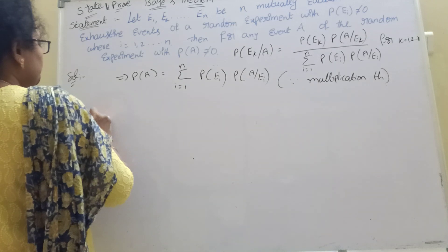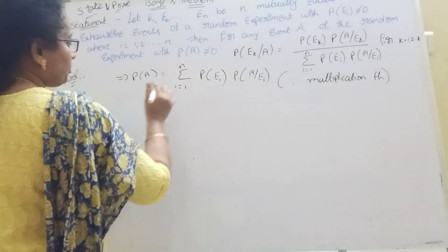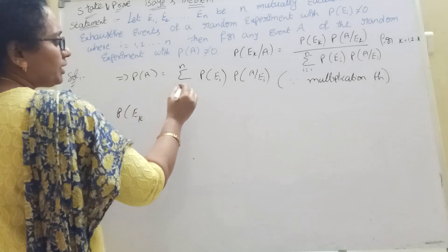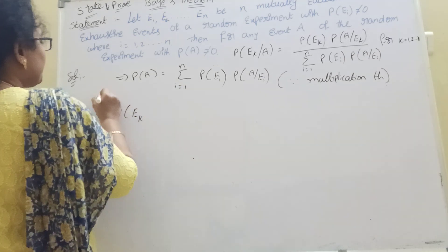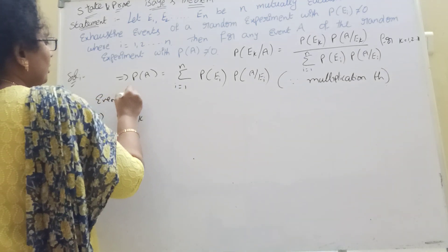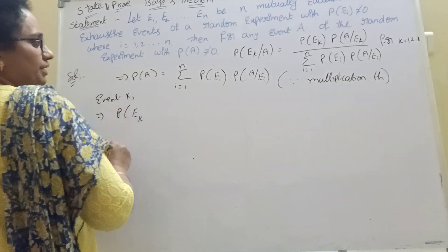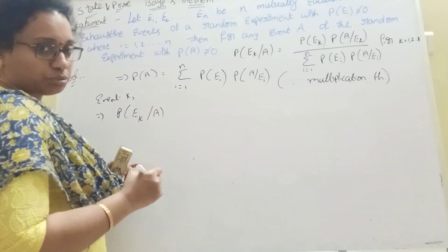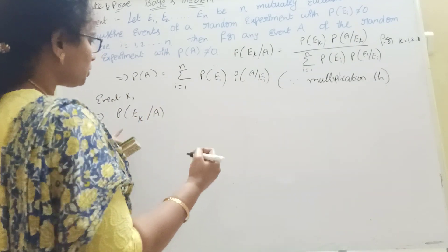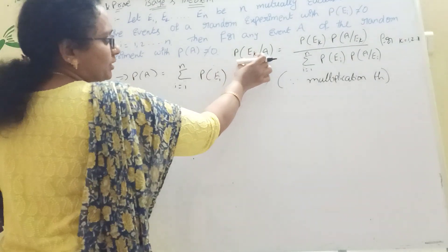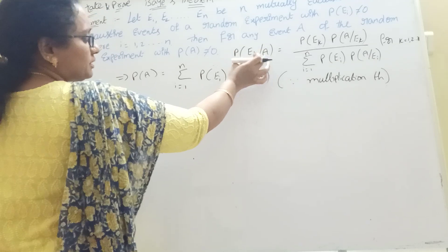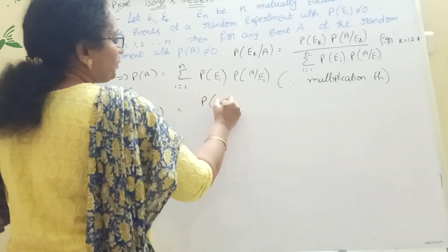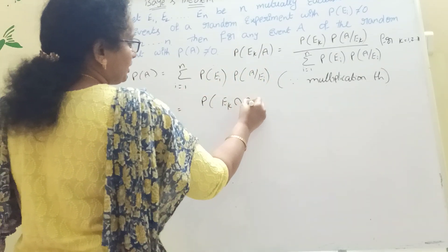Let us say P of Ek given A is equal to Ek. And this event we have K. Event K, Ek given A — conditional probability. This is equal to Ek intersection A, and this is equal to P of Ek intersection A.